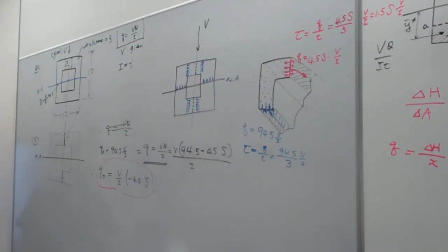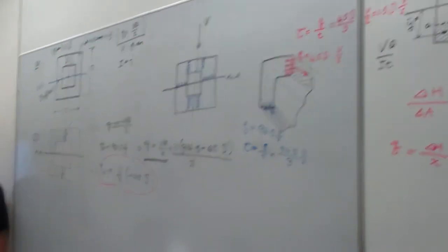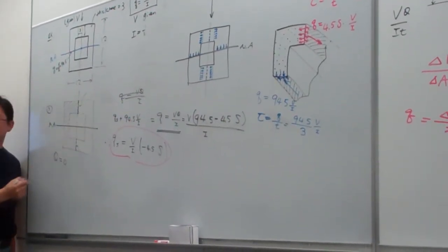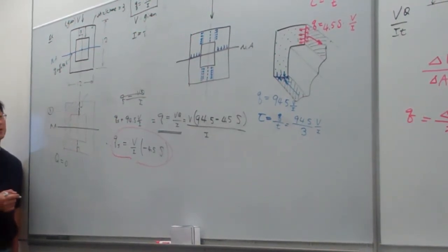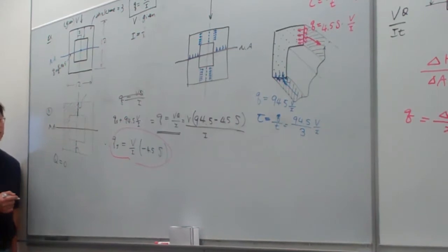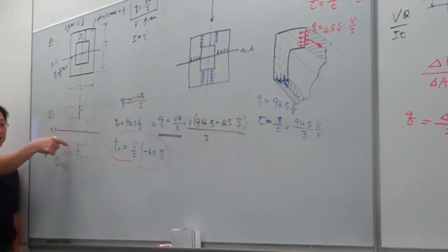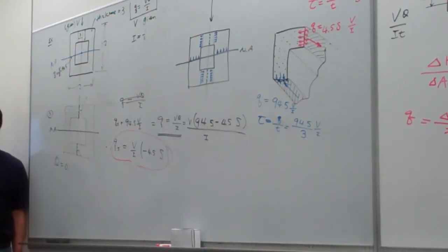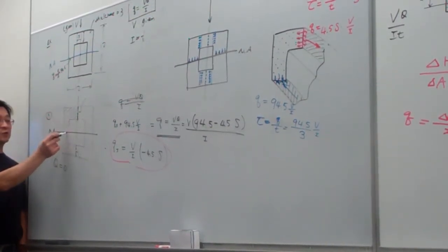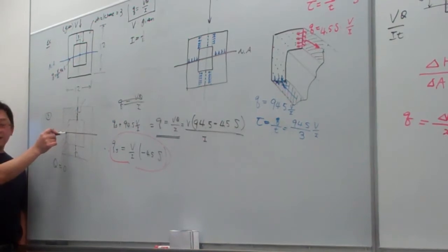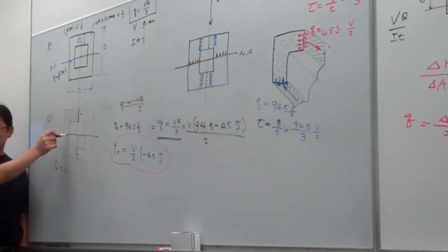The average shear stress equal to zero, because for this case Q equal to zero. The Q equal to zero for this shaded area, why? Because Y bar is zero. For this shaded area, its Y bar is right on the neutral axis, so Q equal to zero.